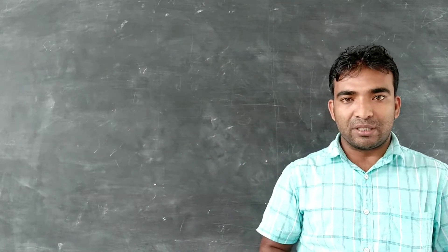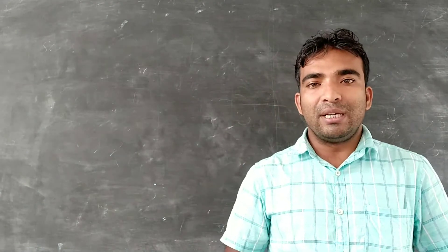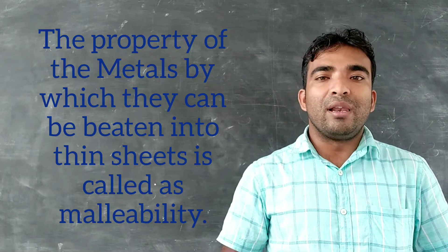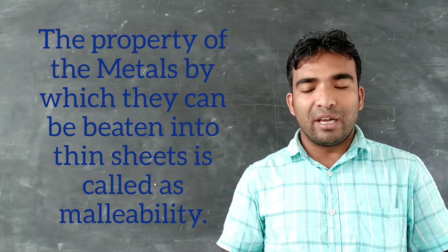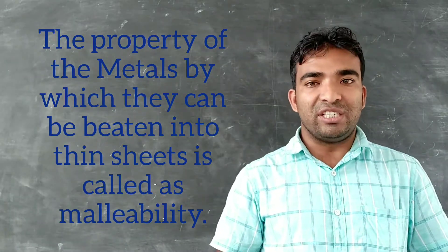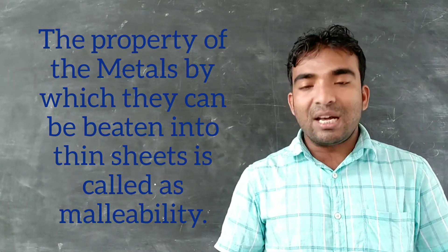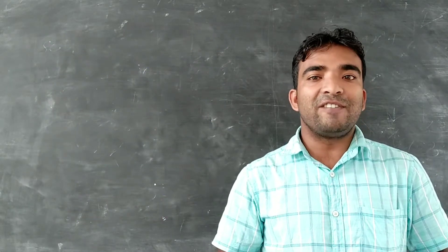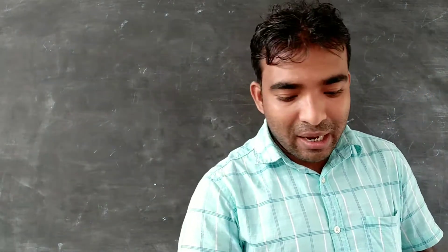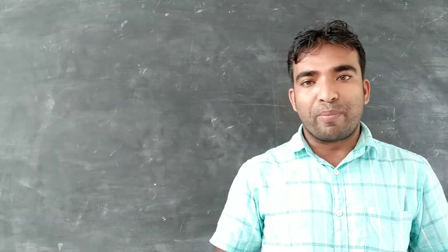The first physical property of metals is malleability. Malleability is the property of a material by which it can be beaten into thin sheets. This is a physical characteristic feature of metals. On the other hand, non-metals like coal and sulfur do not show this property, so they are classified as non-metals.